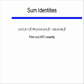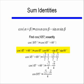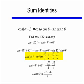Let's look at the same problem, but now find cosine of 105 degrees exactly. Cosine of 105 degrees equals cosine of 45 degrees plus 60 degrees. Using the formula, cosine of 45 plus 60 degrees equals cosine of 45 degrees times cosine of 60 degrees, minus sine of 45 degrees times sine of 60 degrees. Plugging in the known values for cosine of 45, cosine of 60, sine of 45, and sine of 60, the final answer is: cosine of 105 degrees equals square root of 2 minus square root of 6, all over 4.